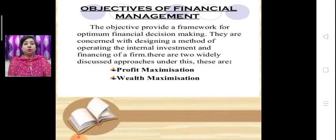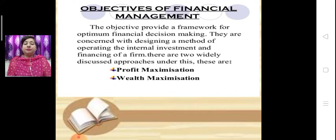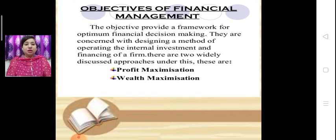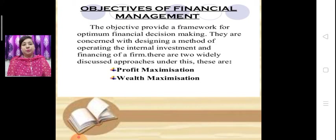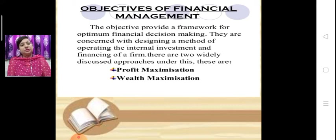The main objective of any business activity is profit maximization. But if we talk about a big organization, and financial management is required in a big organization, profit maximization is our primary motive. The next objective is wealth maximization — wealth of shareholders. Its main objective is to provide a framework for optimum financial decision making. They are concerned with designing a method of operating the internal investment and financing of a firm. There are two widely discussed approaches: profit maximization and wealth maximization.